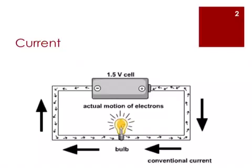An electric current is formed by moving electrons. Before the discovery of electrons, scientists believed that an electric current consists of positive moving charges. Although this belief was later proven wrong, this idea is still widely held.